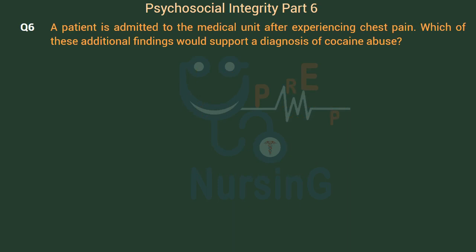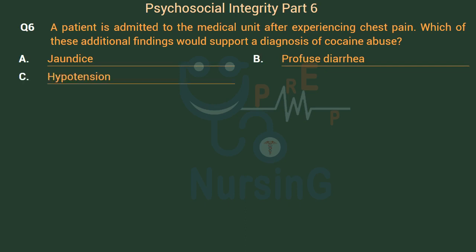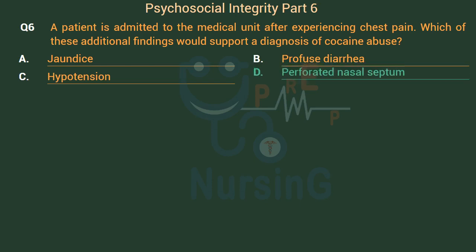A patient is admitted to the medical unit after experiencing chest pain. Which of these additional findings would support a diagnosis of cocaine abuse? Option A: Jaundice. Option B: Profuse diarrhea. Option C: Hypotension. Option D: Perforated nasal septum. The right answer is Option D — Perforated nasal septum.